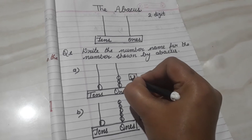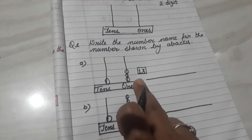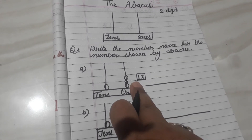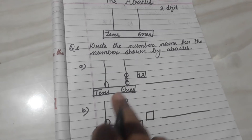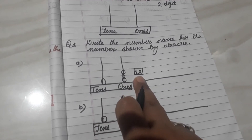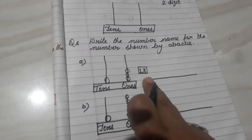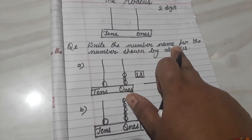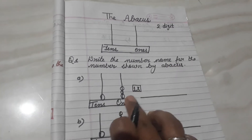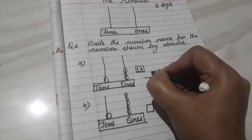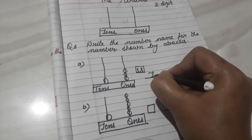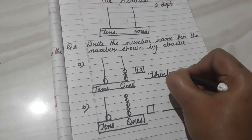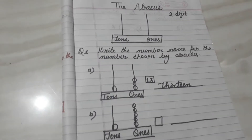So what will we write? Three is at the right side and one is at the left side. Which number does this make? One, three — thirteen. According to the question, we have to write the number name of thirteen. So we will write the spelling: T-H-I-R-T-E-E-N, thirteen.